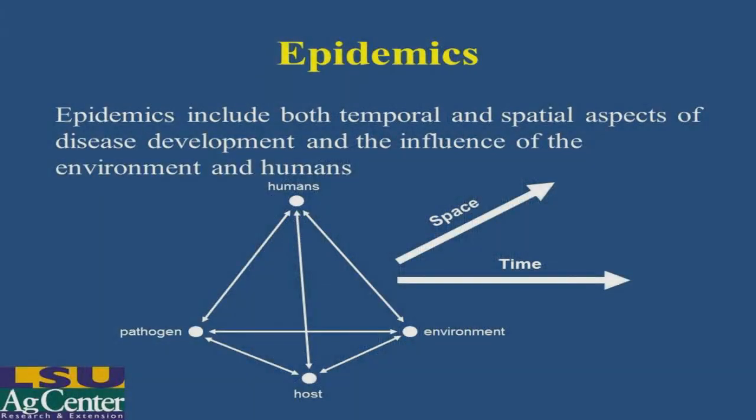When we look at soybeans, in particular, in any field crop for that matter, we're not looking at an individual plant, we're looking at a population of plants. We look for disease that has developed over time and over space. In this illustration, you can see the disease triangle at the very base of our pyramid, but at the top we have humans, because we as humans influence disease by many of the things that we do, especially in our cultural practices and by the environment that occurs around us. So over time and space is how we measure epidemics — an epidemic really is the development of disease over time and through space.